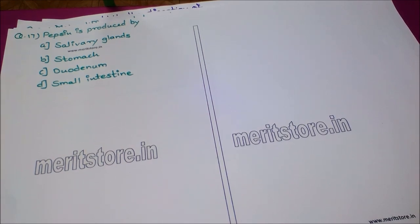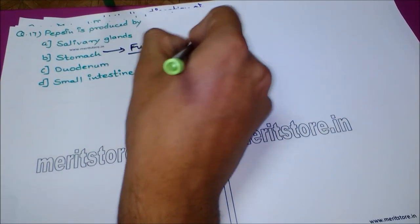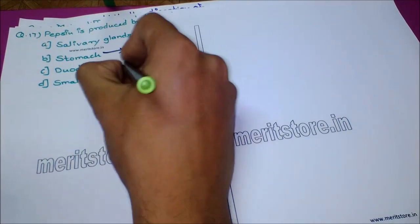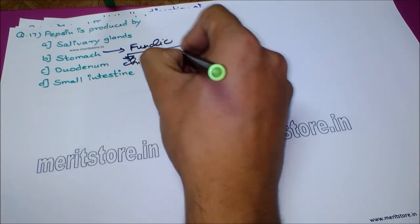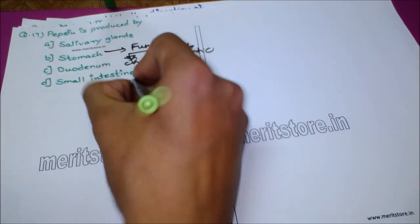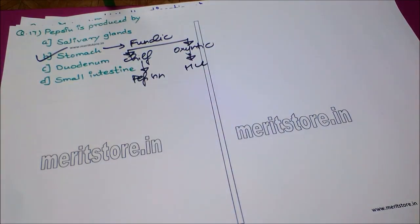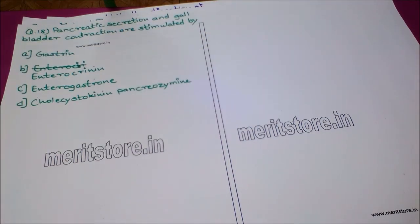The next question: pepsin is produced by — option A: salivary glands, option B: stomach, option C: duodenum, option D: small intestine. The fundic part of the stomach has two types of cells: the chief or zymogen cells and the oxyntic or parietal cells. The oxyntic cells secrete HCl, while the chief cells secrete pepsinogen or pepsin. So the answer is option B, stomach.